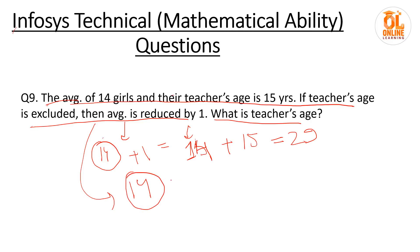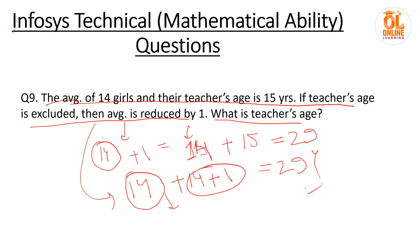The teacher's age must be 14 (the reduced average) plus 14 (to compensate the 14 girls) plus 1 (the teacher's own slot) = 29. So the teacher's age is 29. If you don't understand on the first attempt, pause the video and check the solution again.